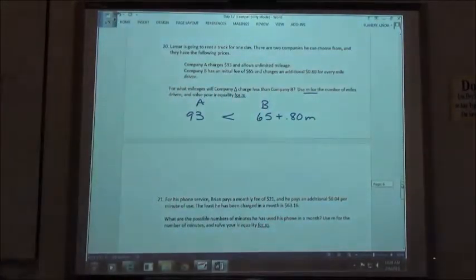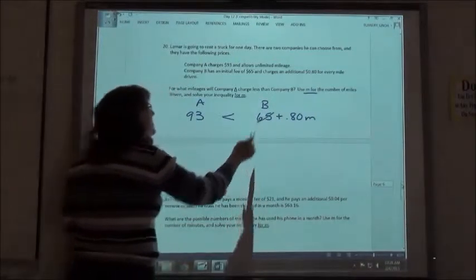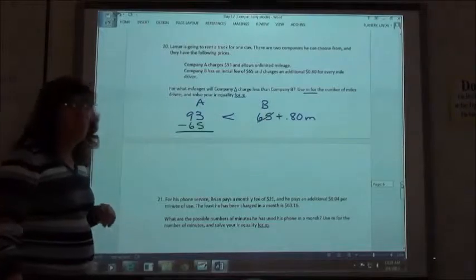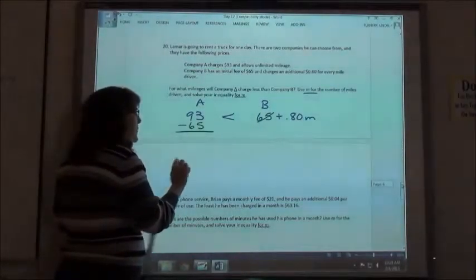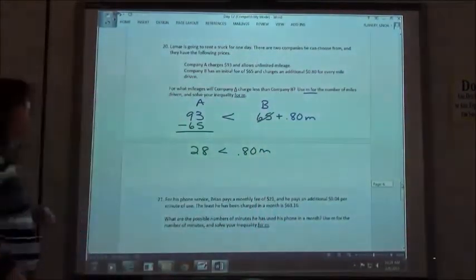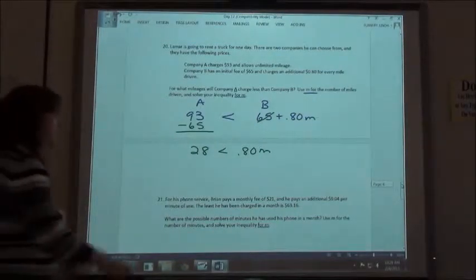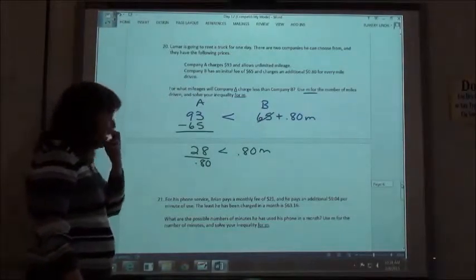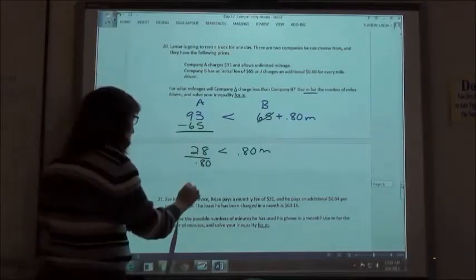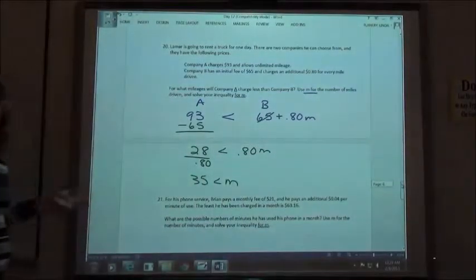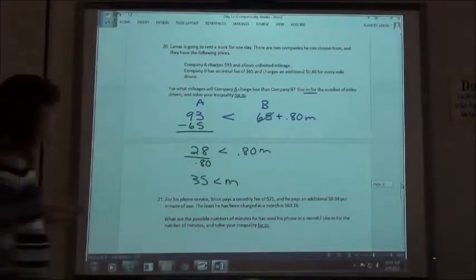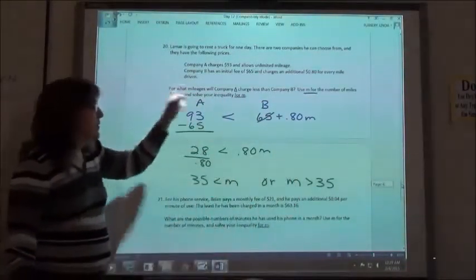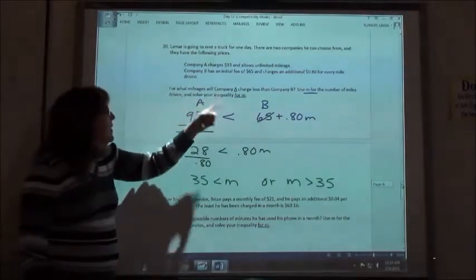To solve this, of course, we're going to subtract our $65. $93 minus $65 is going to give me $28 is less than $0.80M. And then we're going to divide by $0.80. $28 divided by $0.80 is 35. 35 is less than M. Now probably in your head 35 is less than M does not make a whole lot of sense, but we could switch that around and say M is greater than 35. If we drive more than 35 miles, then A is going to be less.